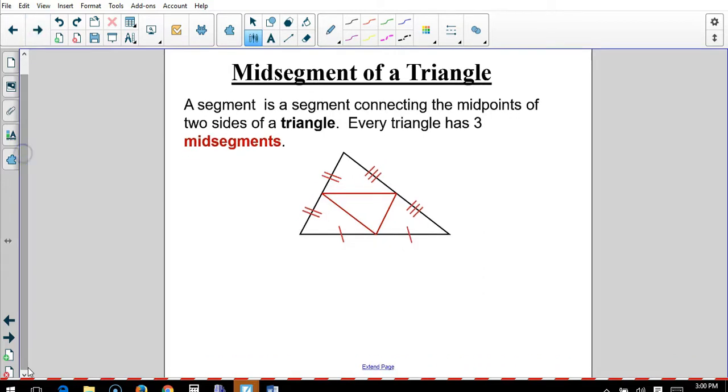Mid-segment. A mid-segment is a segment connecting mid-points of two sides of a triangle. Every triangle has three of them. So, this point right here, this point right here, and this point right here are all mid-points. How do we know that? Because this segment and this segment are equal. And this segment is equal to this segment. And this one here is congruent to this one here. Which means these three points must be the mid-points. Each of these three red lines inside are called mid-segments.